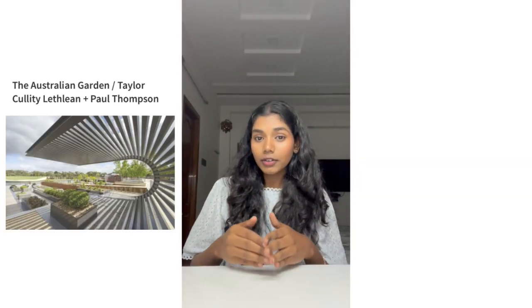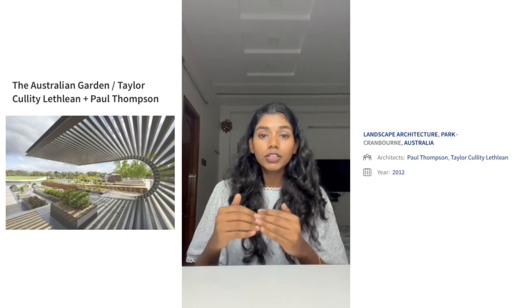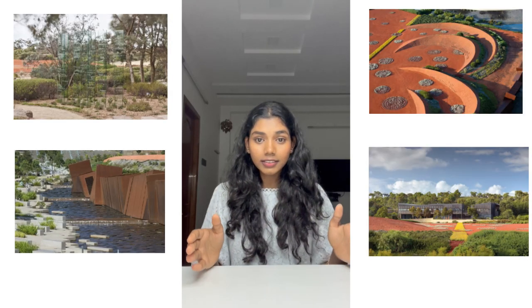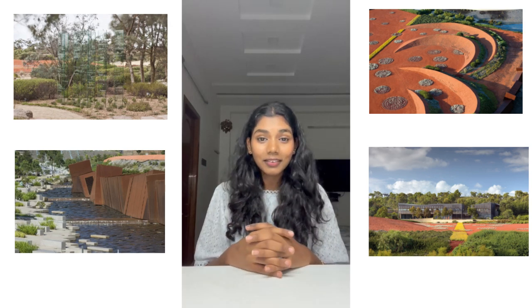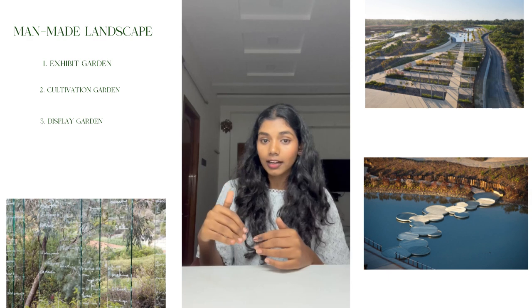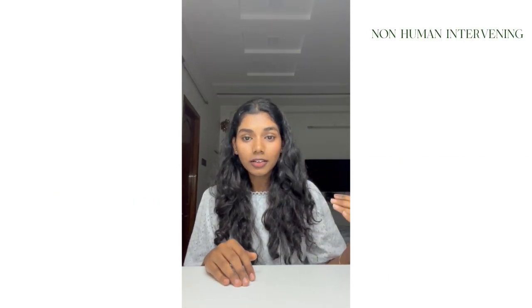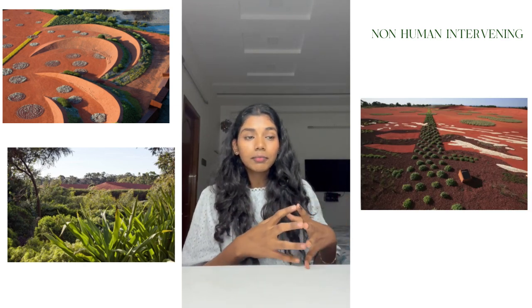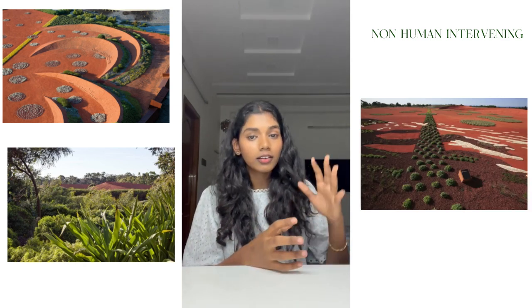Moving on from the philosophies of Paul Thompson, let's understand these in relation to his works. The Australian Botanical Garden project is located in Cranbourne, led by TCL architects and accompanied by Paul Thompson. In this project, we can observe a stark contrast between the east side and the west side, in which Paul Thompson beautifully displays the love-hate relationship of Australian people towards the landscape. On the east side, we can see human-intervened landscapes forming exhibit gardens, cultivation gardens and display gardens. While on the west side, we see naturally formed landscape of Australia, forming a national landscape.